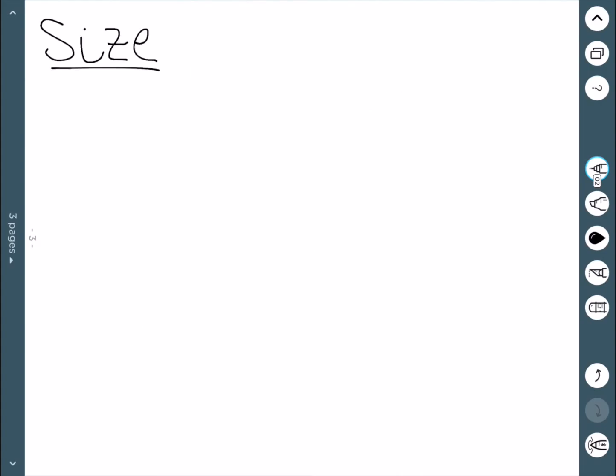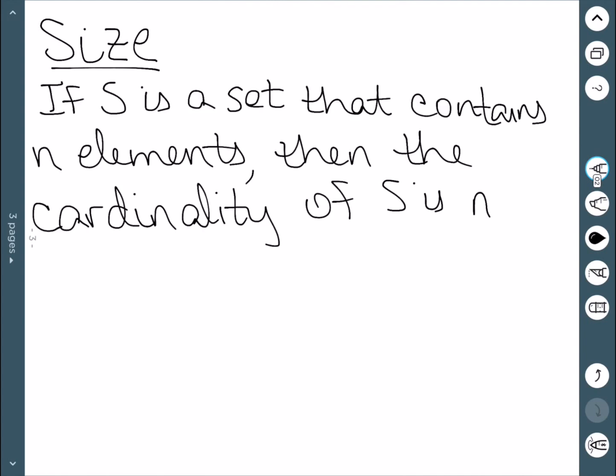The next thing we'll look at is the size of a set. If we have a set S that contains N elements, then we say the cardinality of S is N, and this is written with absolute value signs.